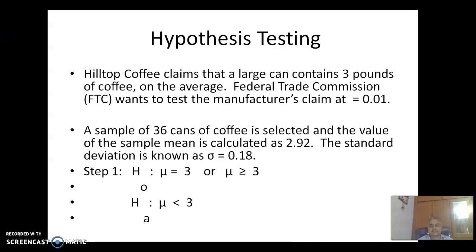Test of Hypothesis. Hilltop Coffee claims that a large can contains 3 pounds of coffee on the average. Federal Trade Commission wants to test the manufacturer's claim at 0.01. A sample of 36 cans of coffee is selected and the value of the sample mean is calculated as 2.92. The standard deviation is known as sigma equals 0.18.